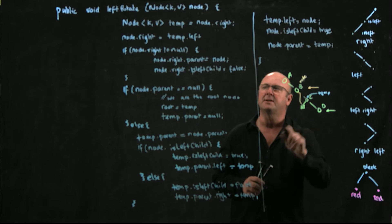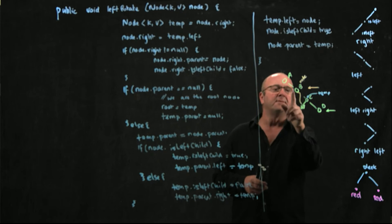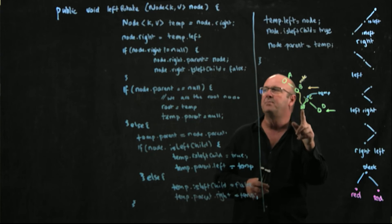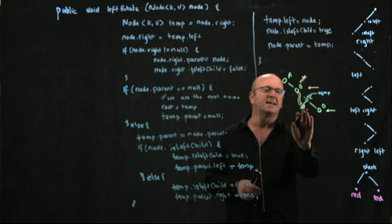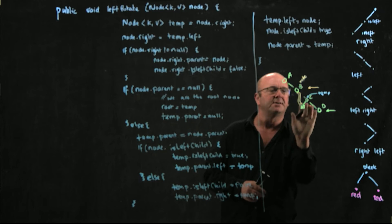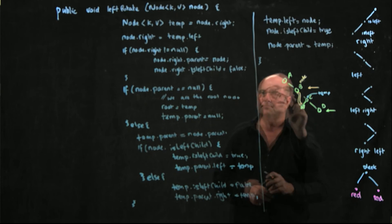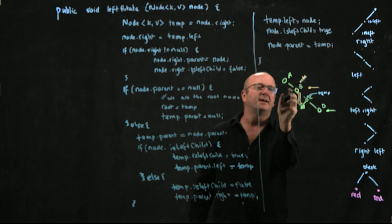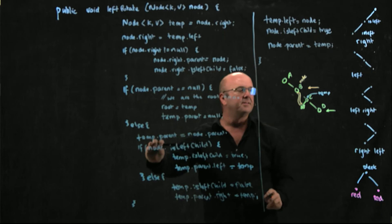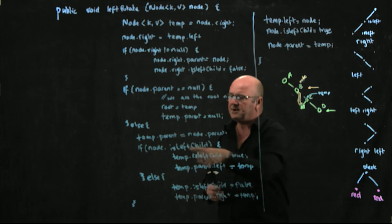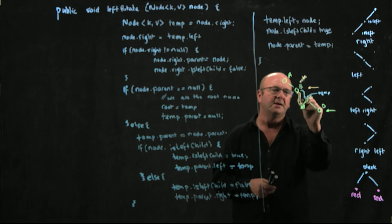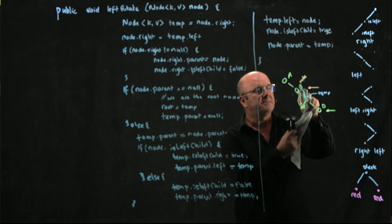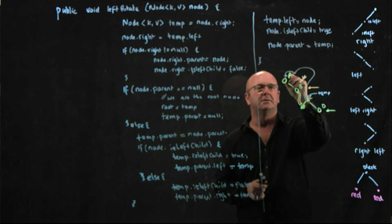I've got two things pointing there — that's fine, we'll fix it later. Now I check if node dot right is not null; if so, I set the parent pointer going back in the other direction, and I set isLeftChild to false because it was a left child of C and now it's a right child of B. Then I look at node dot parent — if it's null, we're at the root. If it's not null, temporary node's parent pointer, which currently points to B, needs to be broken and made to point to A.